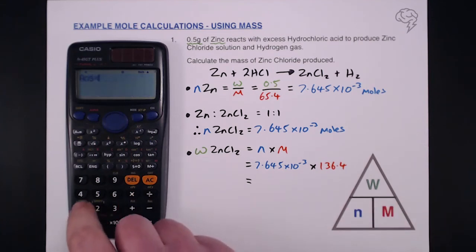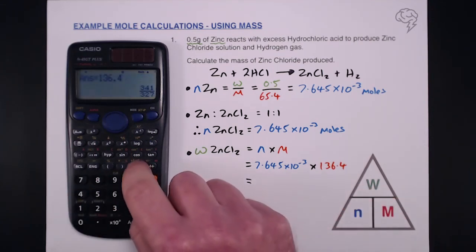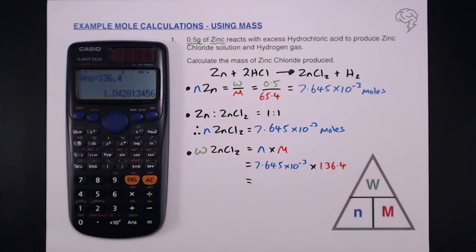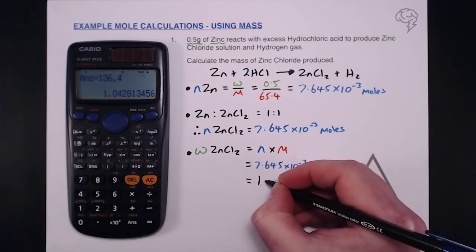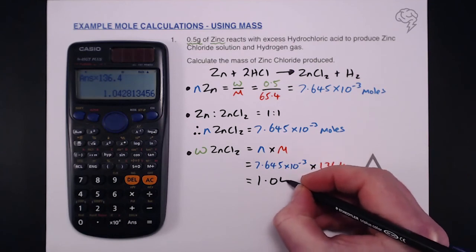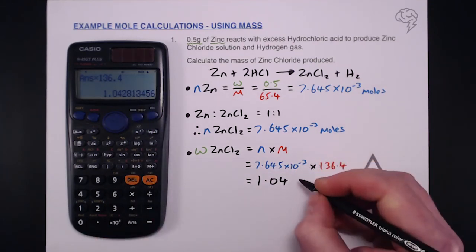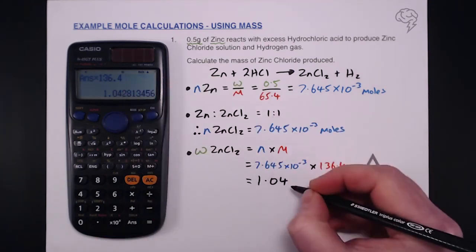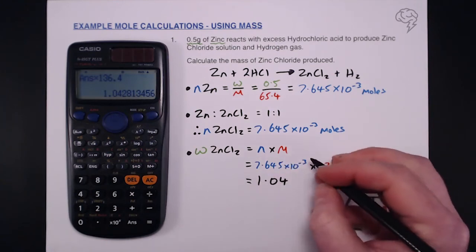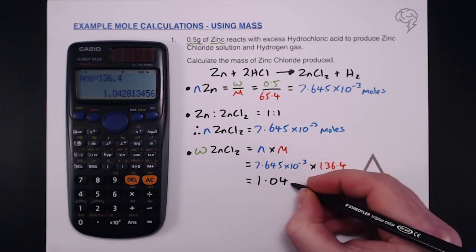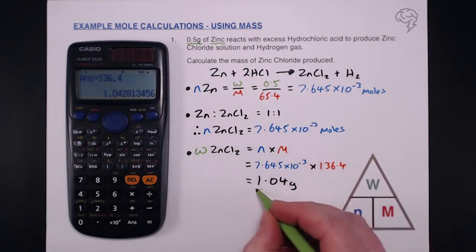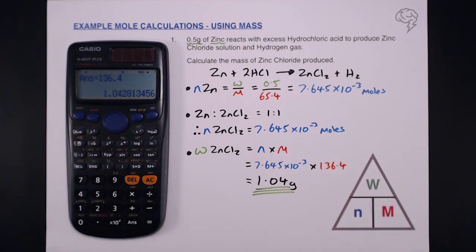That gives us our mass of zinc chloride which is 1.04 grams to two decimal places. If it was three significant figures it would also be the same. So we've got 1.04 grams as our mass of zinc chloride produced.